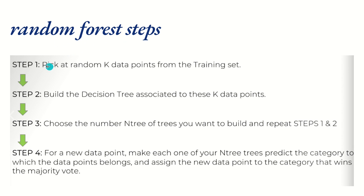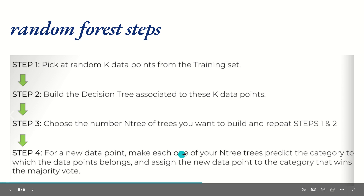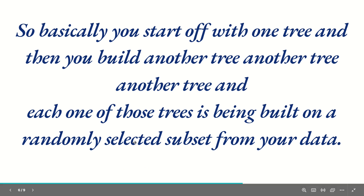Now why is it called 'random'? Here are the steps. Step one: pick random K data points from the training set, instead of considering all observations. Step two: build a decision tree associated with those K points. Step three: choose the number of trees you want to build — in R Studio we use the random forest function where we specify the number of trees — then repeat steps one and two. Step four: for a new data point, make each tree predict the category, and assign the data point to the category that wins the majority vote.